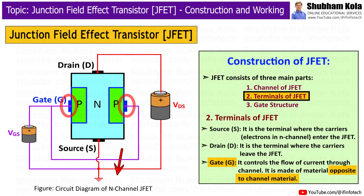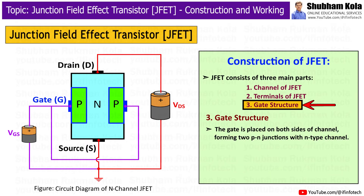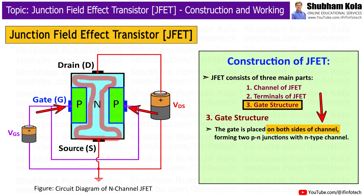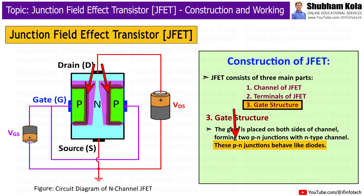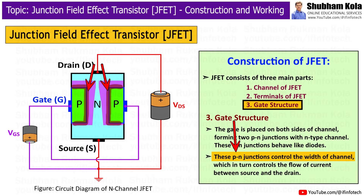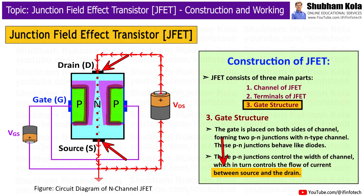The gate is placed on both sides of the channel, forming two P-N junctions with the N-type channel. This P-N junction behaves like a diode. The P-N junction controls the width of the channel, which in turn controls the flow of current between the source and the drain.